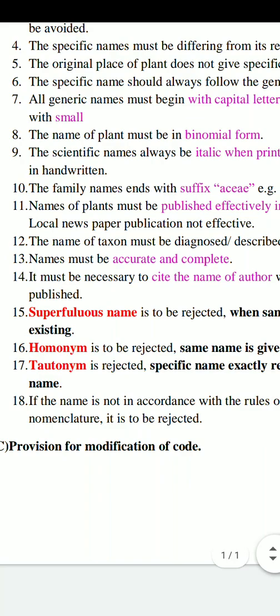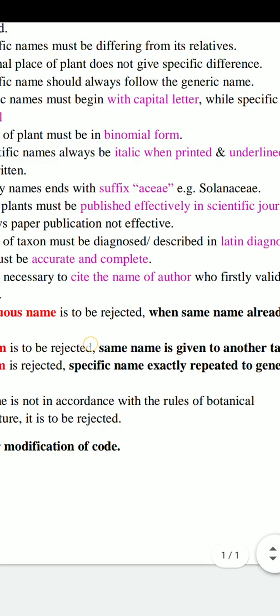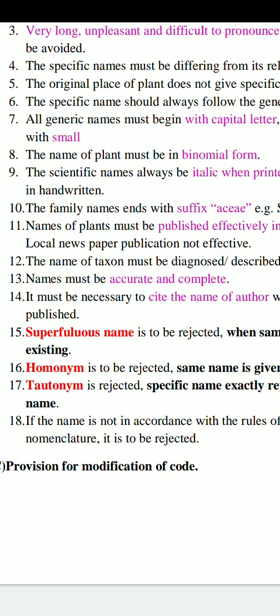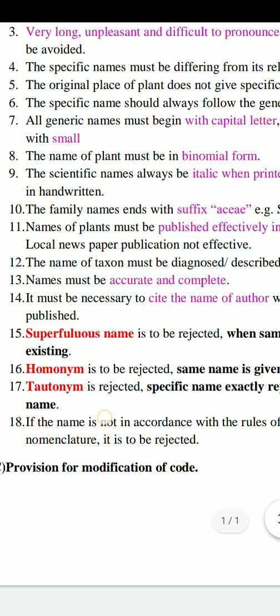Rule 10: The family names end with the suffix -ACEAE. For example: Solanaceae, Malvaceae, Magnoliaceae, etc. However, there are 10 family names that were alternatively used ending with -AE. For example, Compositae ends with -AE, but today the name has been changed to Asteraceae. Both Compositae and Asteraceae are accepted and used in accordance with these rules among the 10 such names.